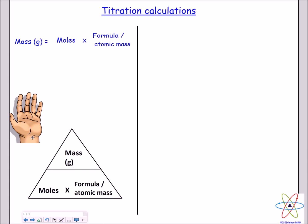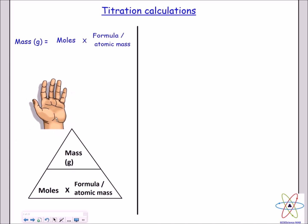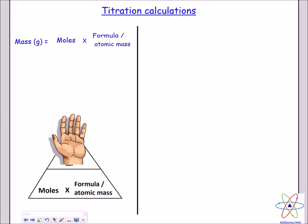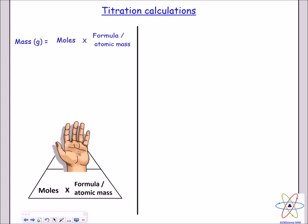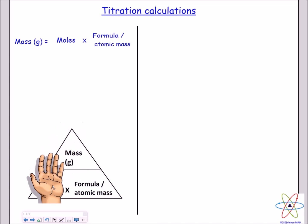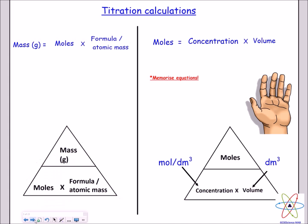How do we use this triangle? It's really easy. Let's say you want to work out mass — you put your hand over mass and you're left with moles multiplied by the formula or atomic mass. And if you want to work out moles, you get mass divided by the formula or atomic mass.